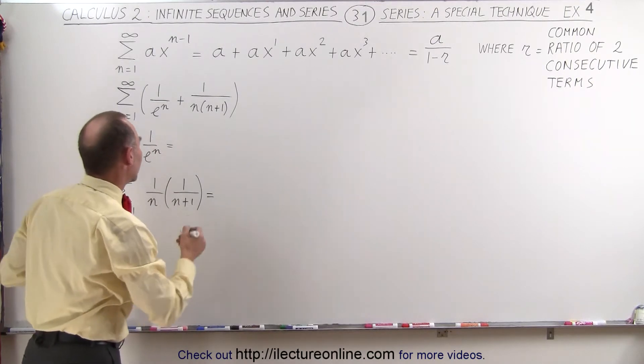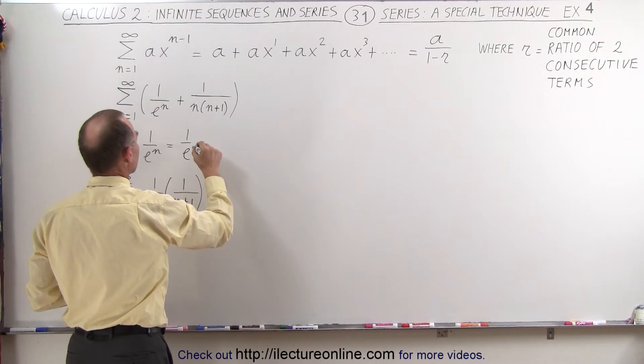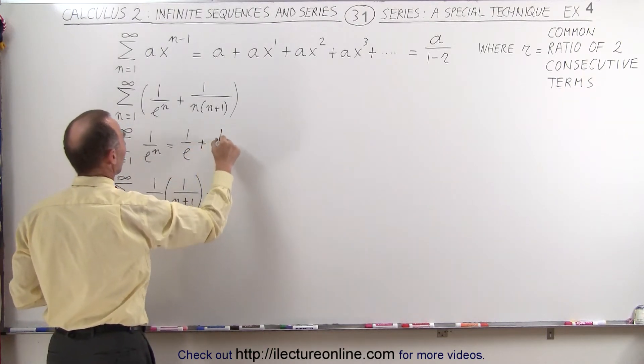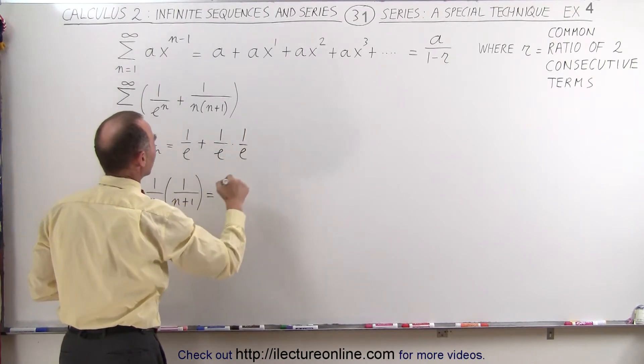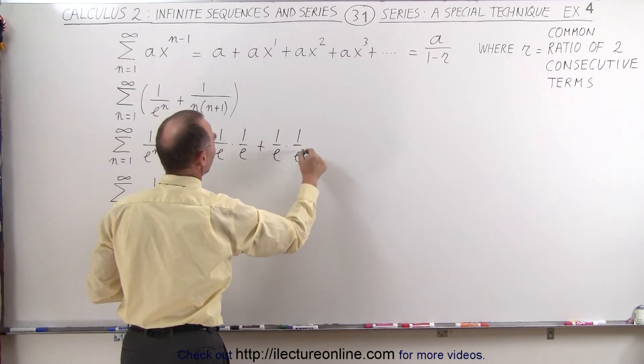So here we can say that this can be written as 1 over e when n equals 1, plus 1 over e times 1 over e, plus 1 over e times 1 over e squared.